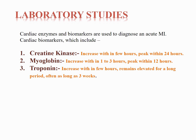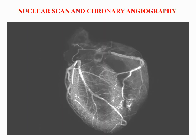Myoglobin is found in cardiac and skeletal muscles; myoglobin levels start to increase within 1-3 hours and peak within 12 hours after the onset of symptoms. Troponin is a protein found in the myocardium; an increased level of troponin in the serum can be detected within a few hours of MI and remains elevated for a long period, often longer than 3 weeks. Nuclear scan is a heart imaging test that helps determine if plaque has narrowed the coronary artery. Coronary angiography is a procedure that uses a contrast medium or dye and X-ray to see how blood flows through the coronary arteries.